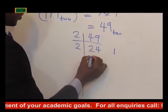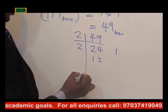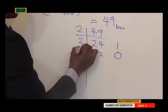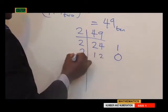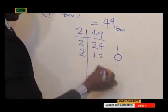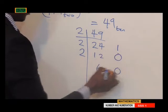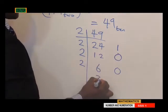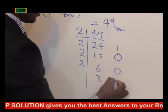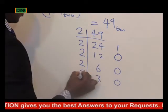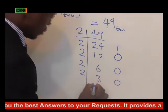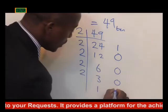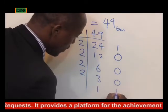24 divided by 2 is 12. 2 times 12 is 24. 24 minus 24 is 0. There is no remainder. 12 divided by 2 is 6. 2 times 6 is 12. 12 minus 12 is 0. 6 divided by 2 is 3. 2 times 3 is 6. 6 minus 6 is 0. 3 divided by 2 is 1. 2 times 1 is 2. 3 minus 2 is 1. So we are having 1 as a remainder.